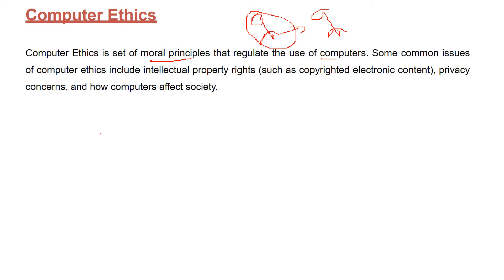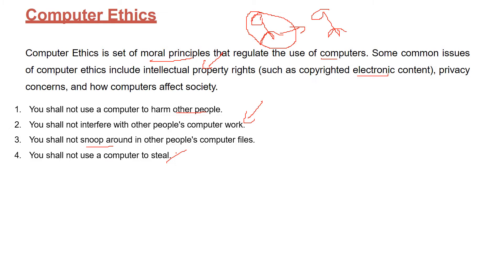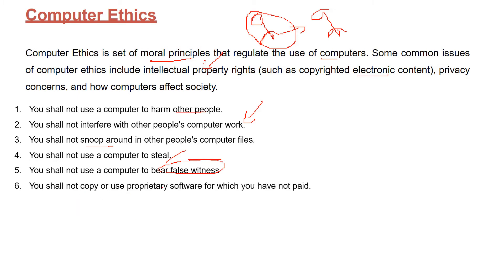There are common issues of computer ethics which involve IPR — intellectual property rights — like copyright of electronic content, privacy concerns, and how computers affect society. First, you should not use a computer to harm any other person. Do not interfere with other person's computer work. Do not snoop into another person's computer files. Do not steal from his or her computer or network. You shall not use a computer to bear false witness. You shall not copy any proprietary software, because we call it piracy.